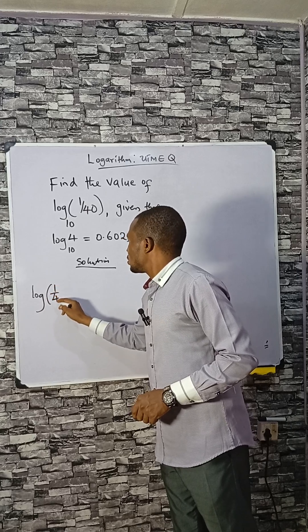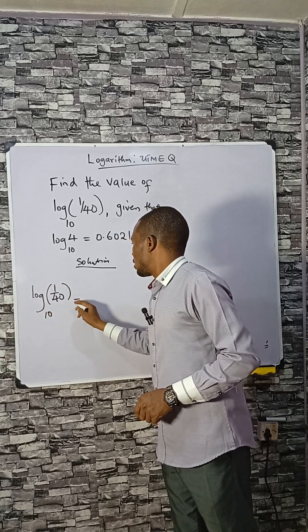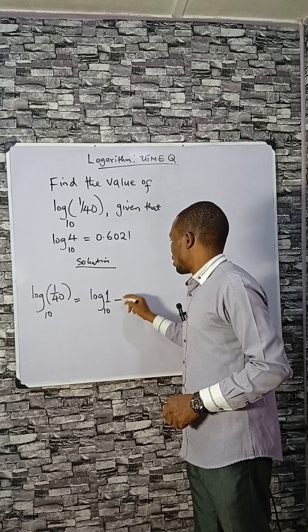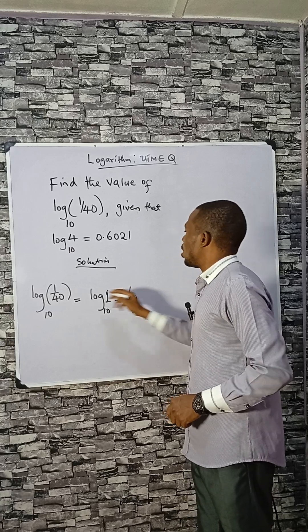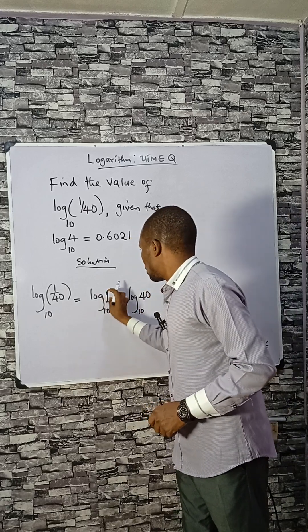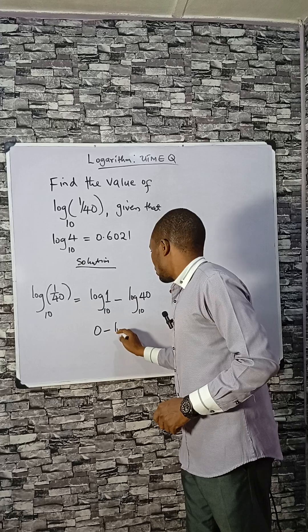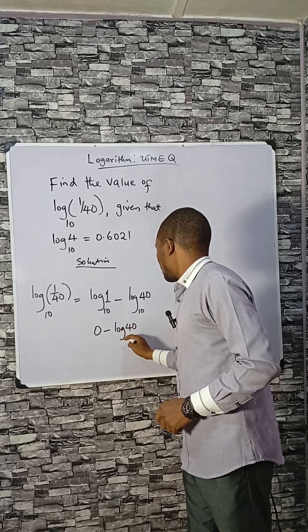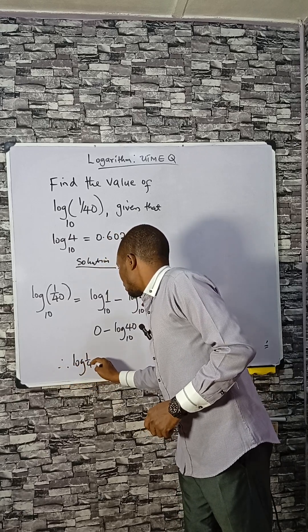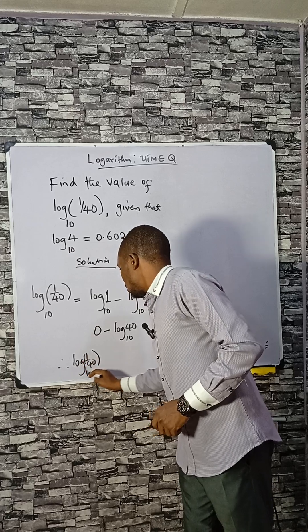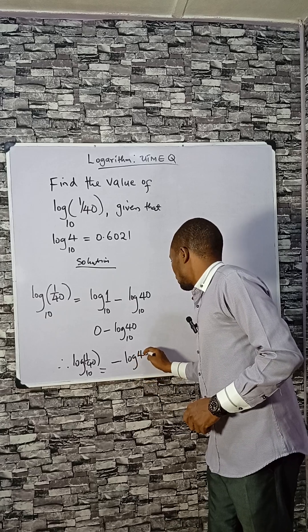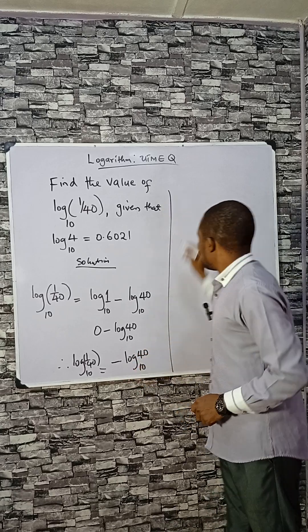Log(1/40) base 10 can be written as log 1 base 10 minus log 40 base 10. Since log 1 is 0, this becomes 0 minus log 40 base 10. Therefore, log(1/40) base 10 is the same thing as minus log 40 base 10. So let's solve now.